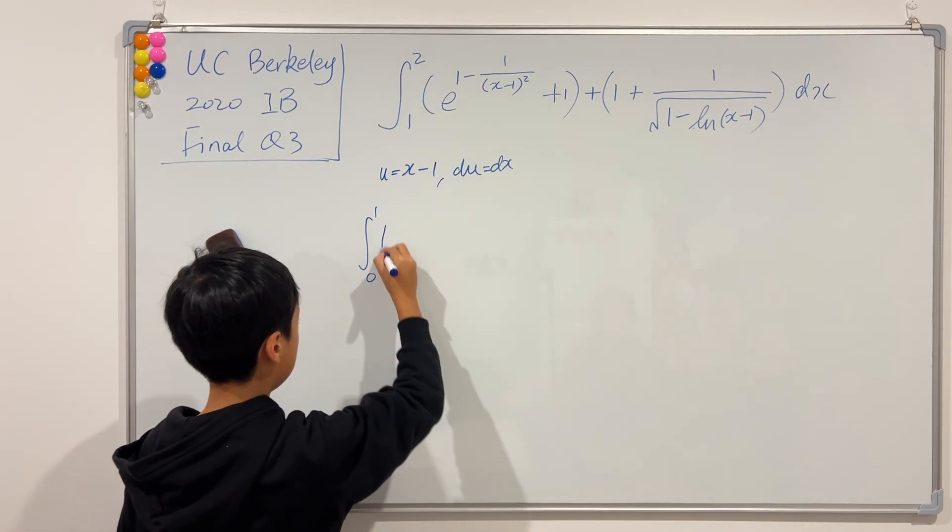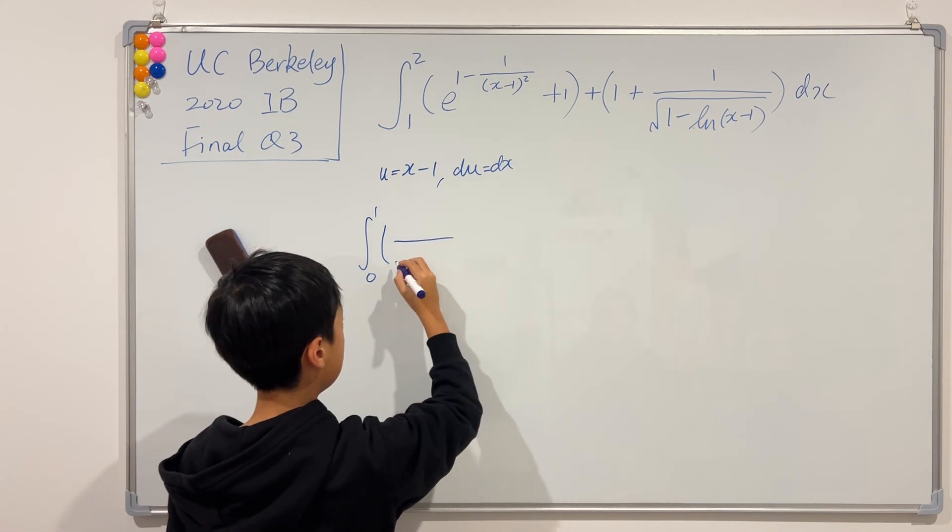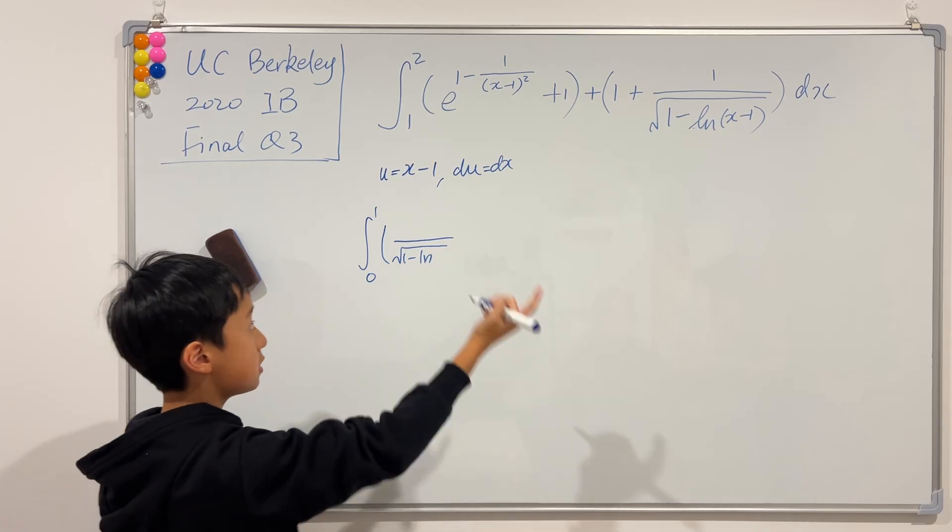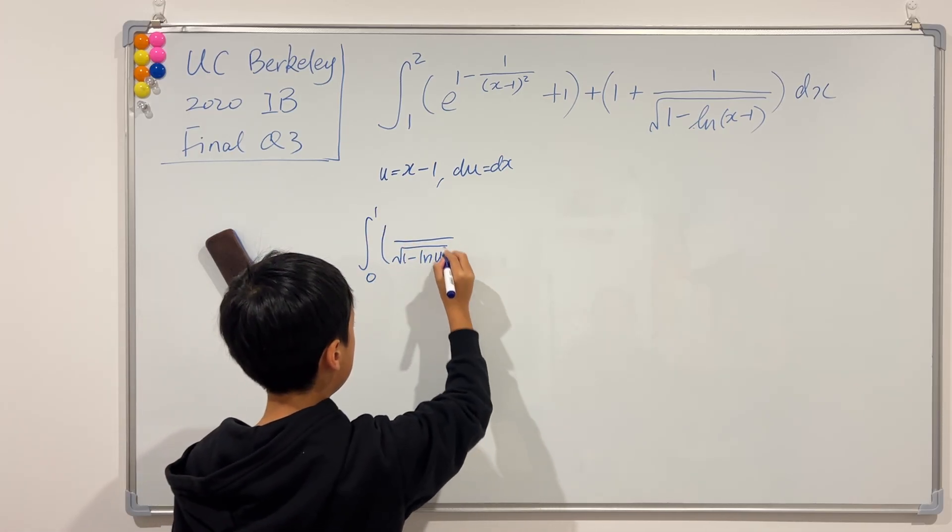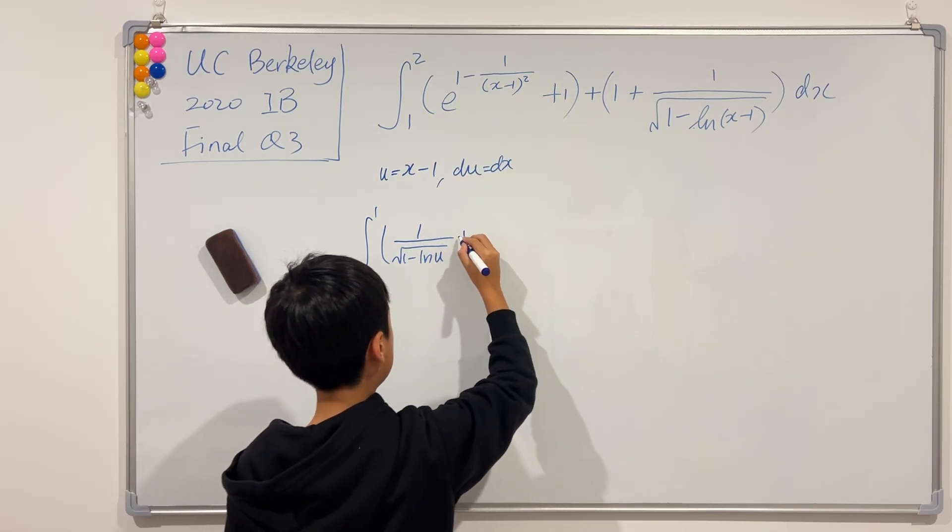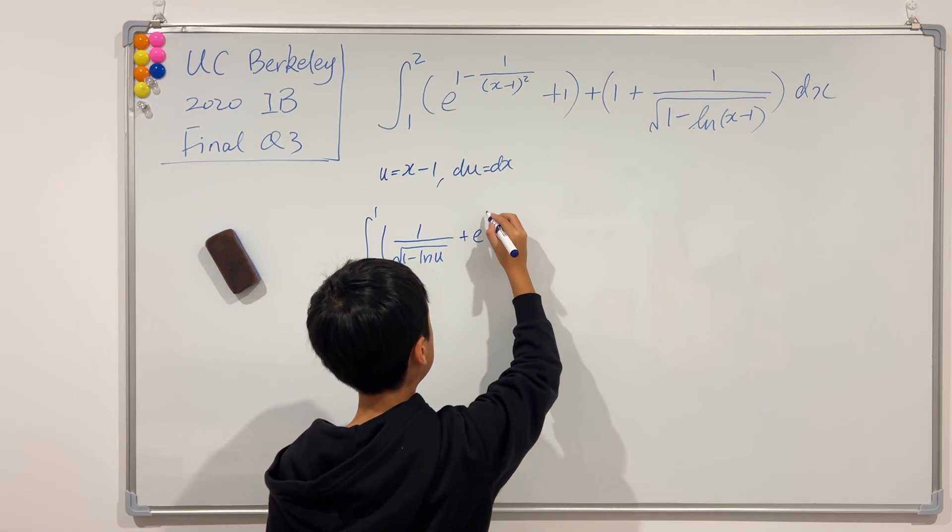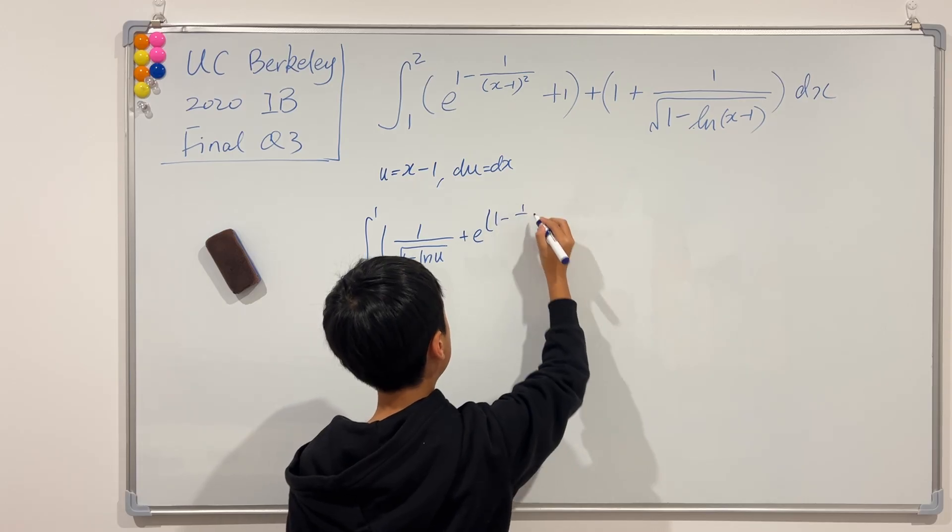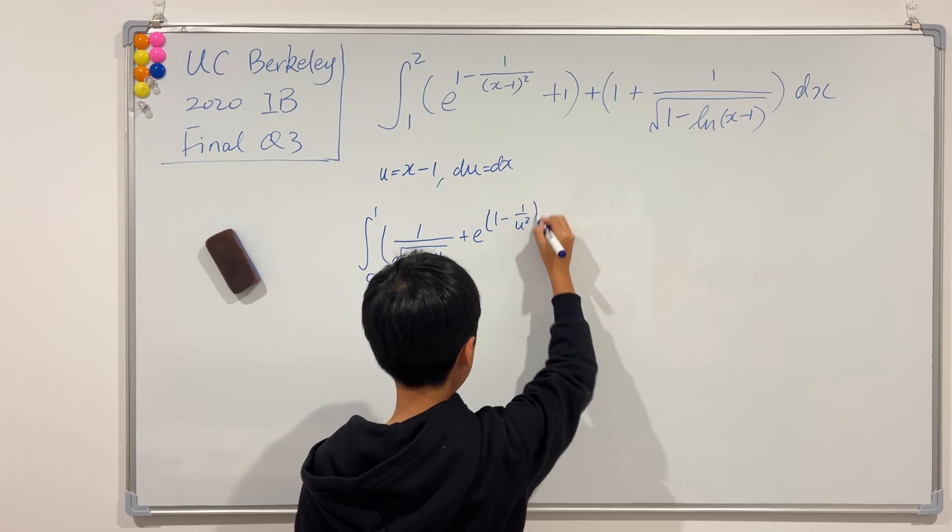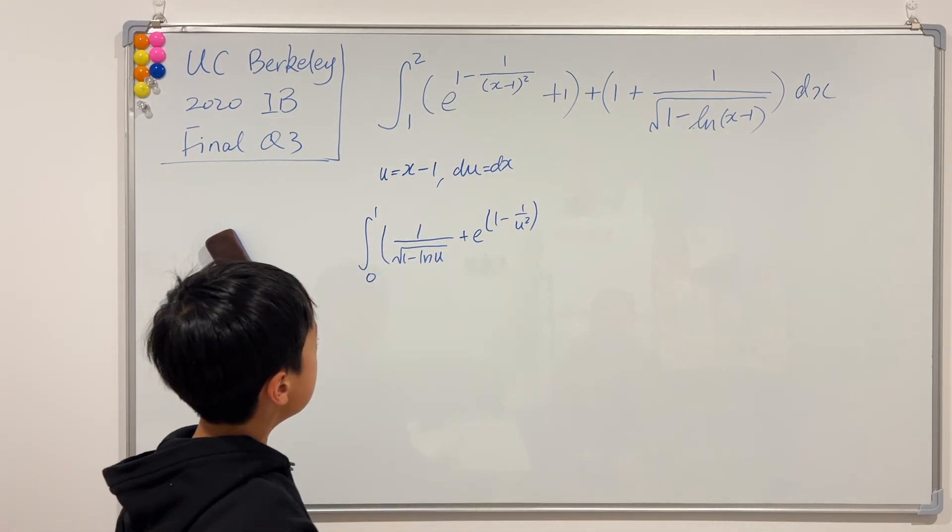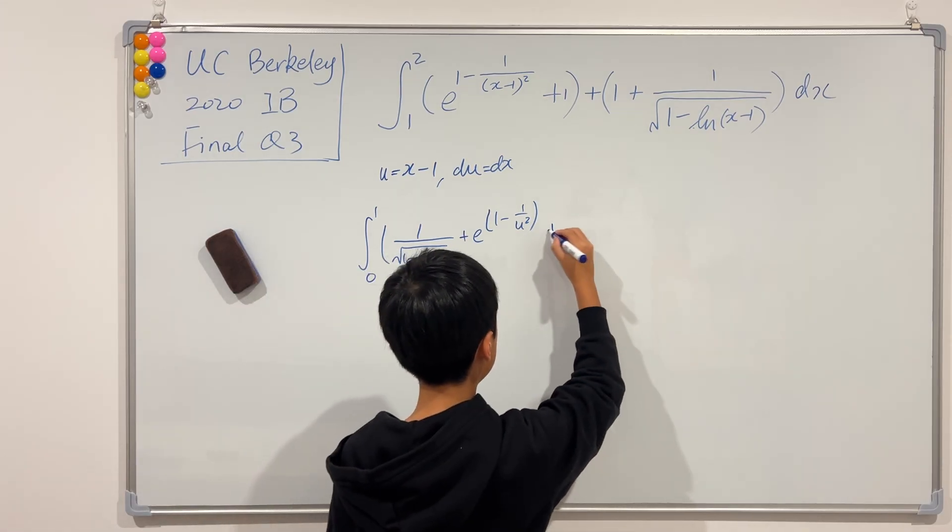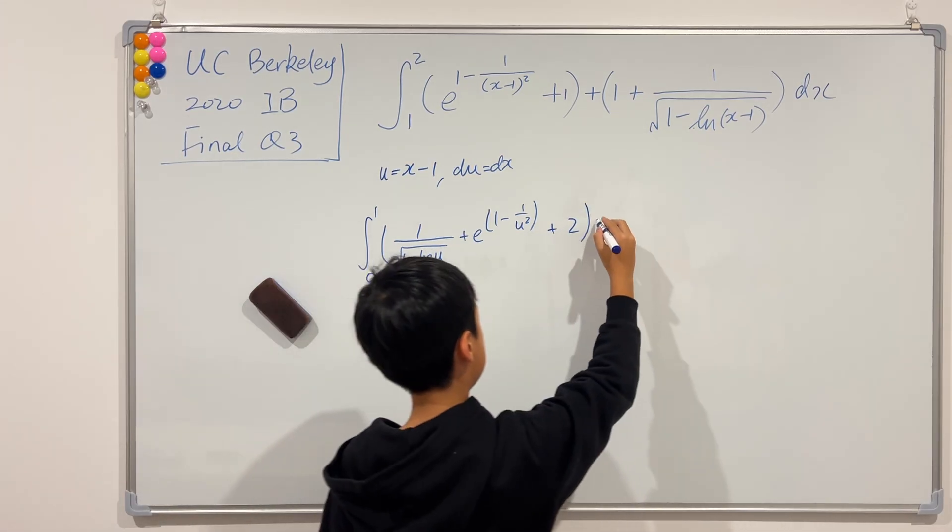So we'll get square root of 1 minus ln of x minus 1, which is just the u. And then I'm going to add this e to the power of 1 minus 1 over x minus 1, which is again the u. And then just note that 1 plus 1 is what? Two. So we can just add the lonely 2 at the end, du.